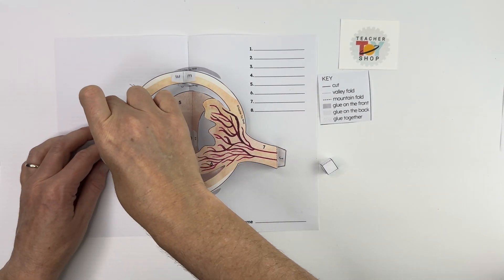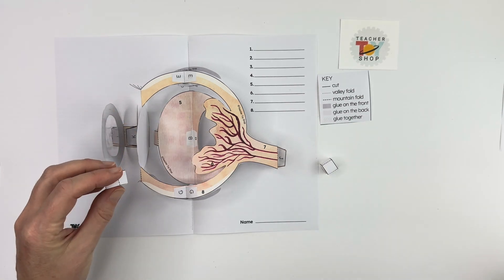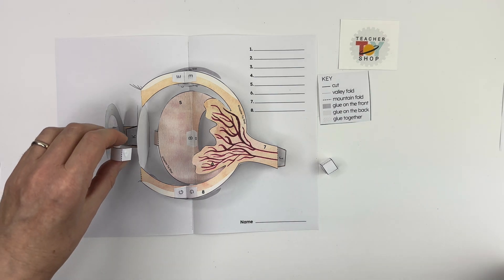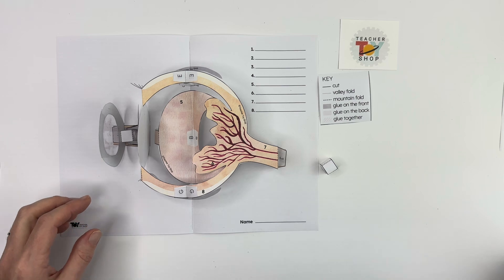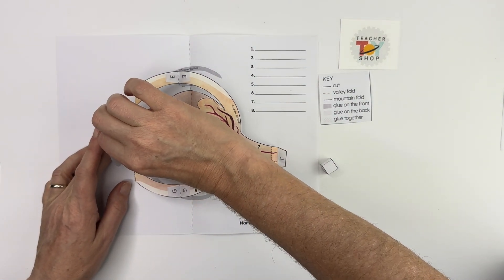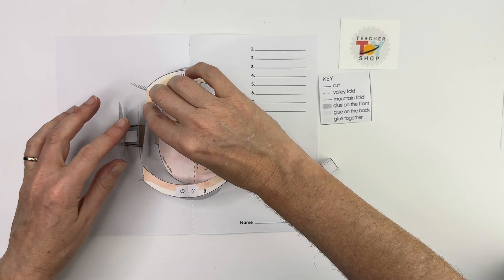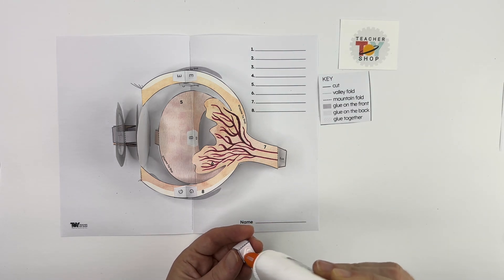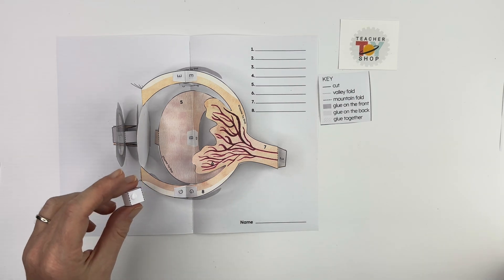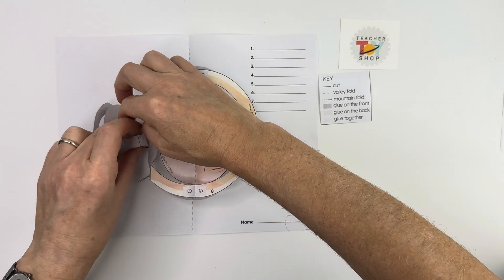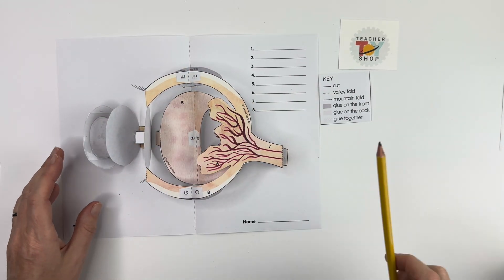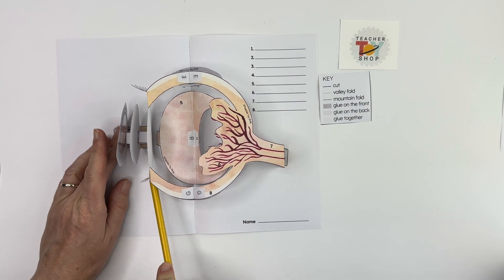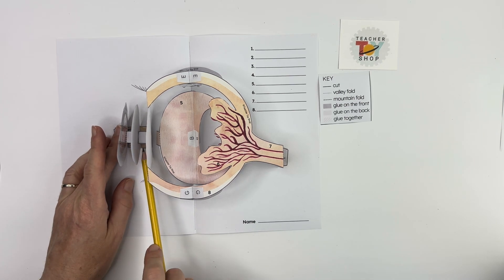Okay and then these little cubes are to help support the pieces when you open and close this a lot to help keep them popping up. So we'll put a little bit of glue here. You can see there's actually a mark for the M piece here and then I'm going to put one more between the lens and the iris. Use a pencil to try to push that down and hold those in place.